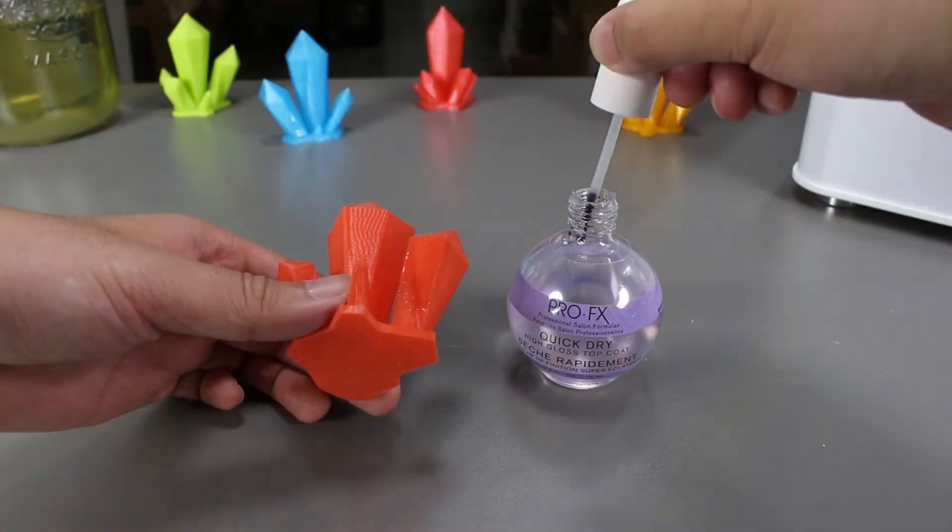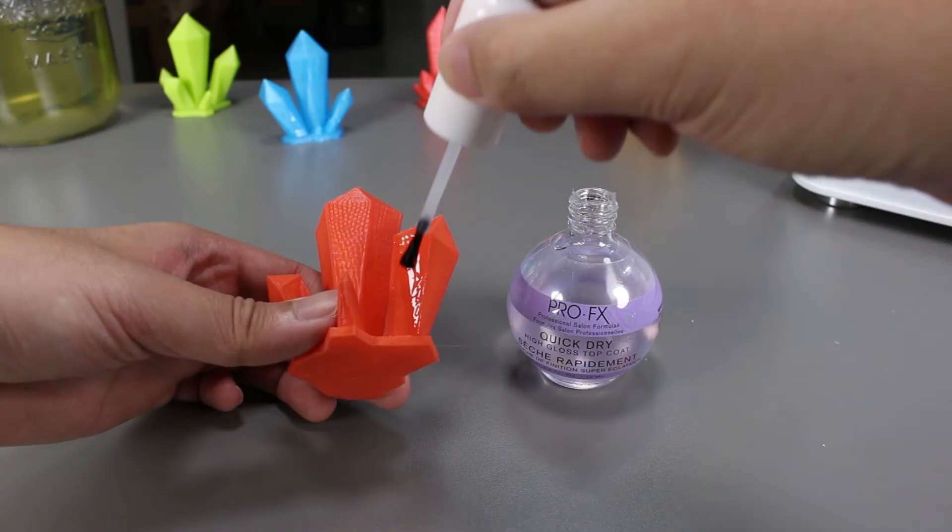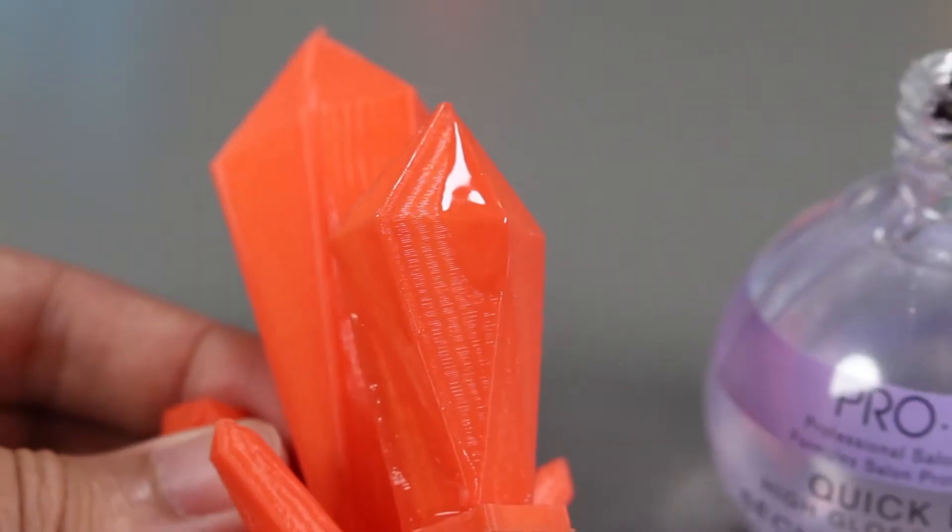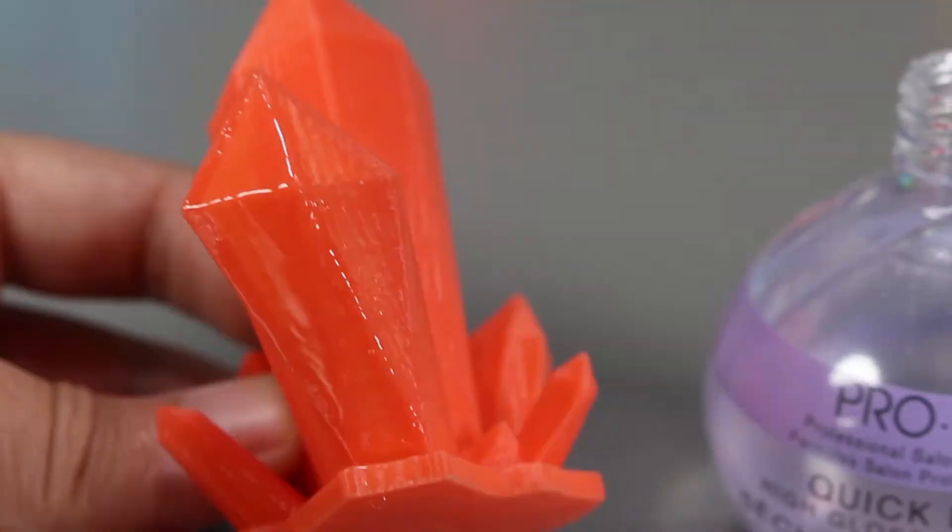We'll put on one coat onto the gem. I'll just put the top coat on one side of the gem so we can see the difference between the two after it dries up.